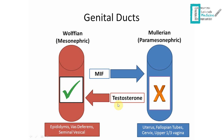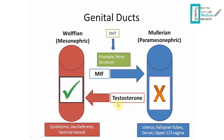What does dihydrotestosterone do? It is responsible for the external genitalia — it gives us the prostate, the penis, and the scrotum (PPS for short). If there is no DHT or no hormonal input, externally you're going to have labia majora, labia minora, and female external genitalia.